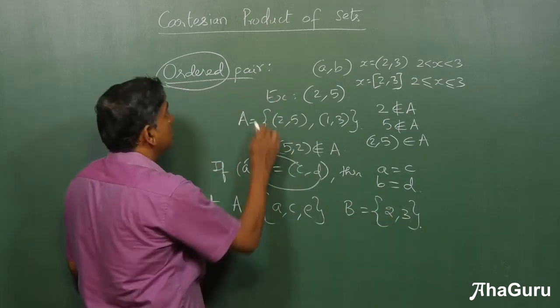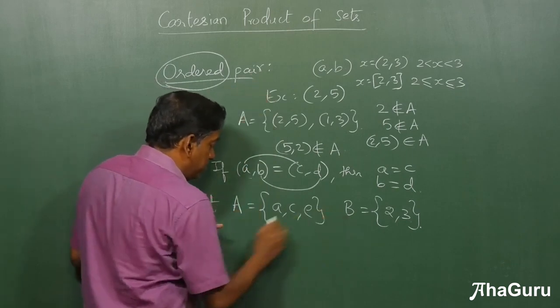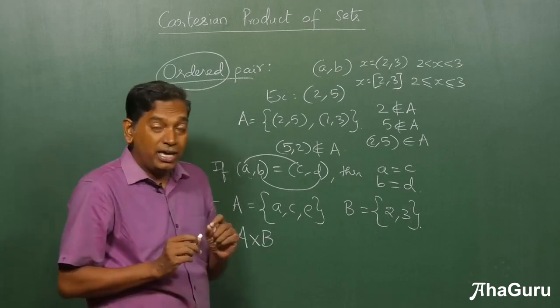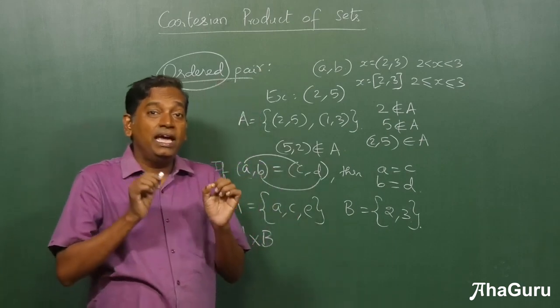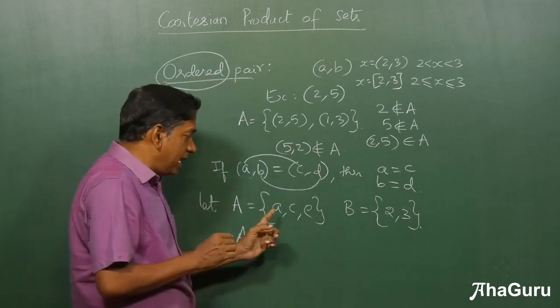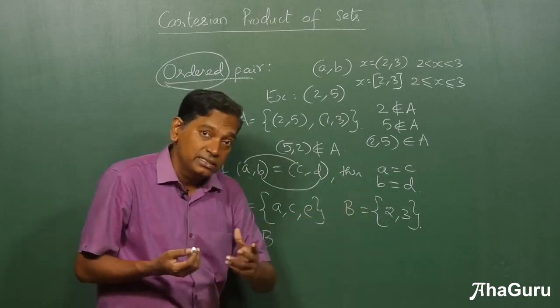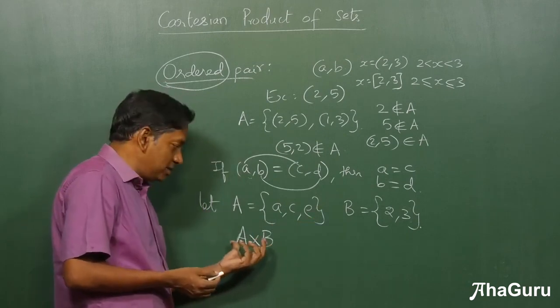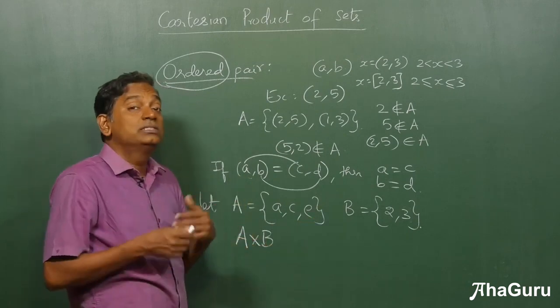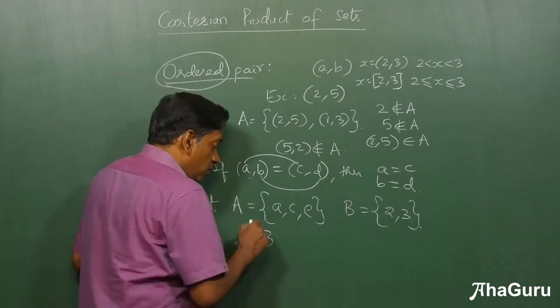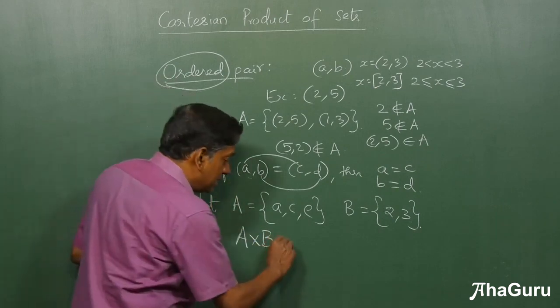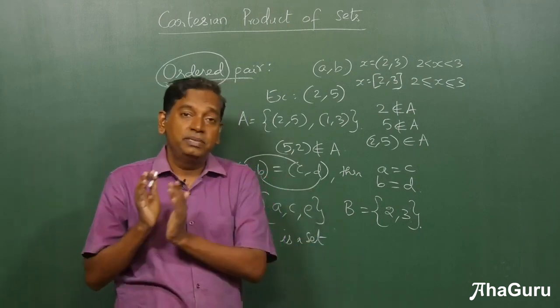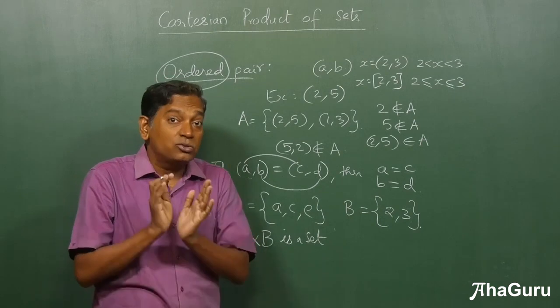The Cartesian product of the sets A and B is denoted by A cross B. It's like A into B, but we are not actually going to multiply. How can you multiply sets? It's not like numbers. But we use that symbol just to say that this is product. The first thing is, A×B is a set. A is a set, B is a set, A cross B is also a set.